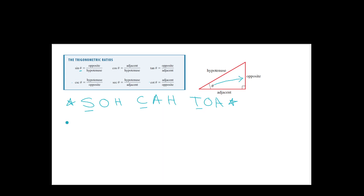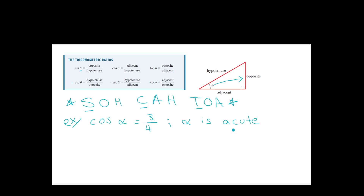Let's take an example. Let's say cosine of some angle alpha is equal to 3 over 4. I need a little more info about alpha — I'm going to tell you that alpha is acute. Acute means the smaller angle of the triangle. So alpha is the acute one, meaning he's the smaller angle.